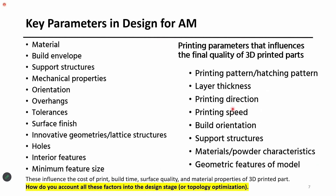Some key parameters in design for additive manufacturing: material is one of the things because not every material can be accommodated in 3D printers — there are limited materials. Some 3D printers also have limited build volume. If you have a part about one meter in length and want to manufacture it with metal additive manufacturing powder bed fusion, you may not have such a large machine. Support structures, expected material properties, and orientation are all important parameters.